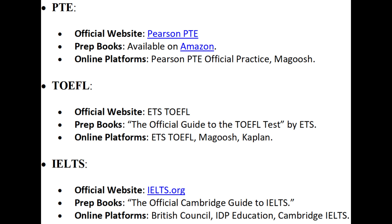Segment 3: Where to Find Sample Questions and Answers. PTE: official website — Pearson PTE; prep books available on Amazon; online platforms — Pearson PTE Official Practice, Magoosh. TOEFL: official website — ETS TOEFL; prep books — The Official Guide to the TOEFL Test by ETS; online platforms — ETS TOEFL, Magoosh, Kaplan. IELTS: official website — IELTS.org; prep books — The Official Cambridge Guide to IELTS; online platforms — British Council, IDP Education, Cambridge IELTS.